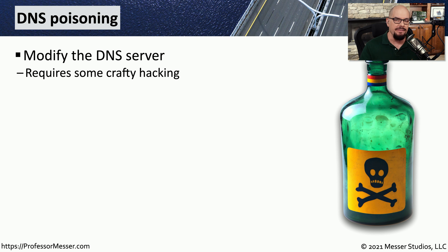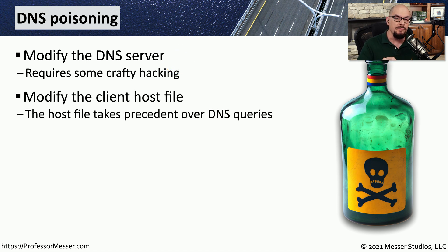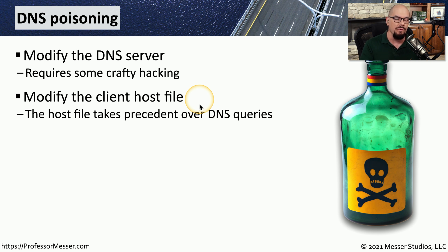If you want to perform an on-path attack to devices that are not on your network, one way to do this is through the use of DNS poisoning, where you modify the entries inside the DNS server. This requires someone to have the skills to break into the DNS server and make that change. But if you can modify those DNS files, you can redirect people to whatever IP address you'd like. If you're trying to change where one particular device may be communicating, you don't have to change the DNS server — you can simply modify the local host file on that particular client.